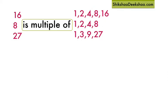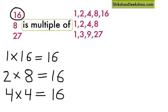Let's take number 16. We can obtain number 16 by multiplying 1 and 16, 2 and 8, 4 and 4. So we say 16 is the multiple of 1, 2, 4, 8 and 16.